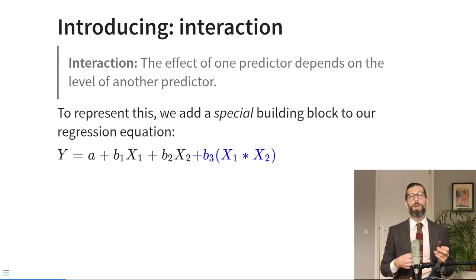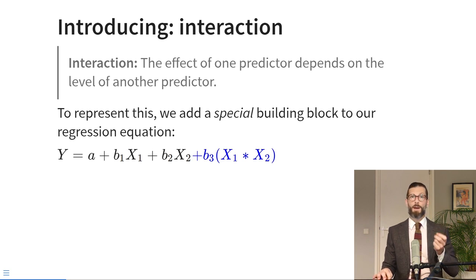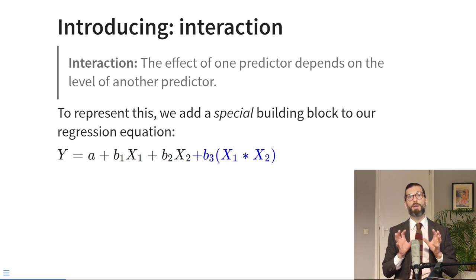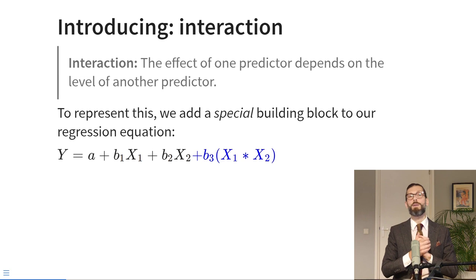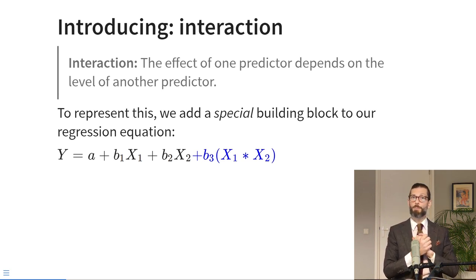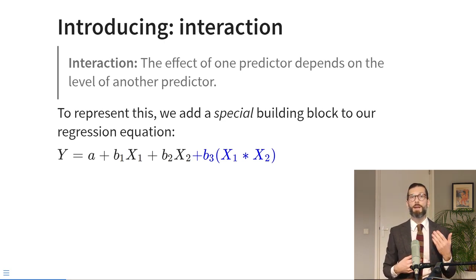We can define interaction as a situation where the effect of one predictor depends on the value of the other predictor. To represent this, we add a block that takes the form plus b times x1 times x2. The two interacting variables are multiplied with one another, creating what we call a product term. That product term will have its own slope, which represents the strength and direction of the interaction effect.